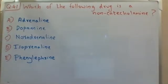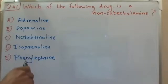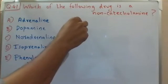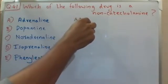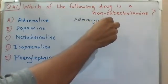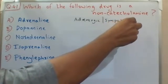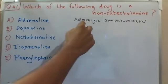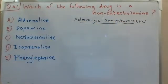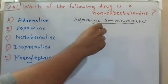Before coming to the correct choice, if you look at the choices — adrenaline, dopamine, noradrenaline, isoprenaline, phenylephrine — they all belong to the adrenergic drug category. Adrenergic drugs are also known as sympathomimetic drugs.